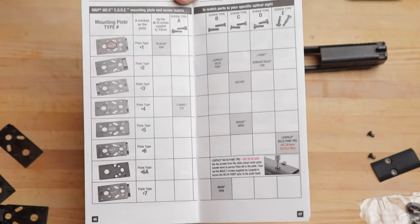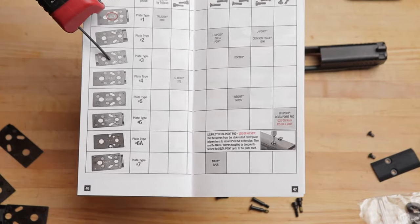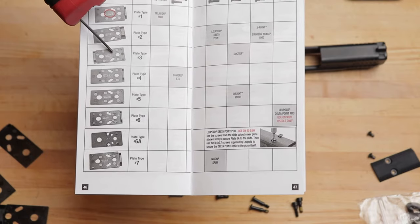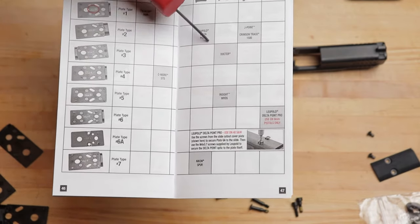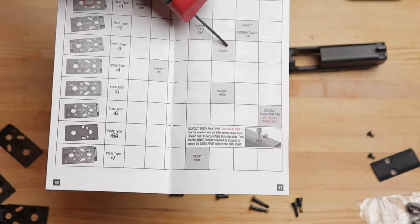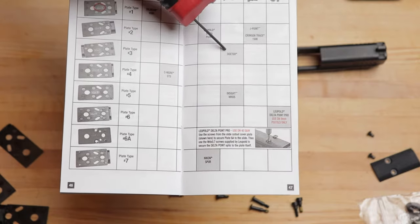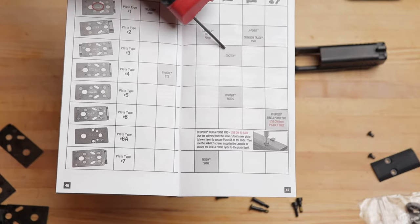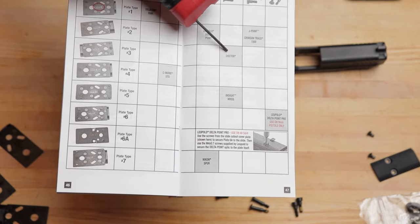So, how this works, let's say you ended up with plate number three. Number three is the only one that worked with your optic. What you're gonna do from here is you're going to slide down until you get to the footprint that is used for it. In this case, plate number three uses the footprint Doctor. This, I believe, is what the Vortex Venom uses.